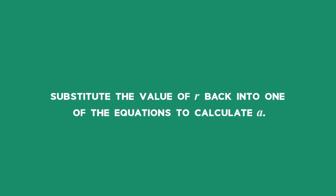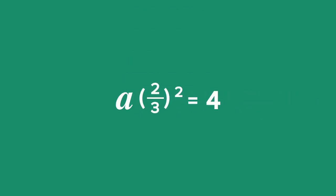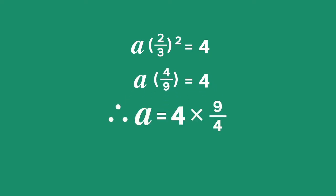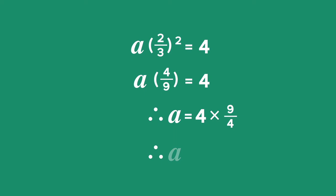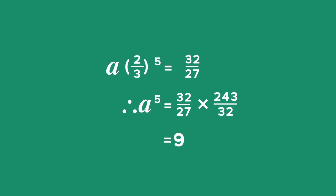Now substitute the value of r back into one of the equations to calculate a. Using Equation 1, we get a times 2 thirds squared equals 4. a times 4 ninths equals 4. Therefore, a equals 4 times 9 fourths, therefore a equals 9. Similarly, if we substitute into Equation 2, we will also get a equal to 9.